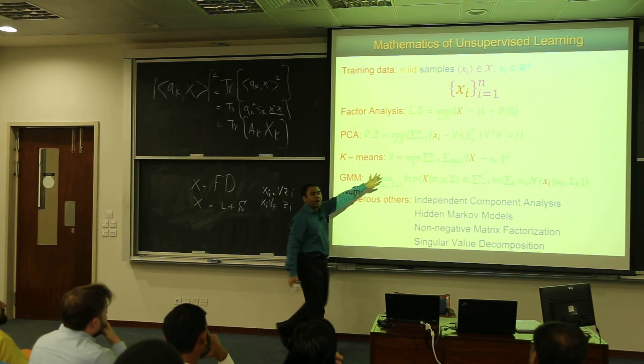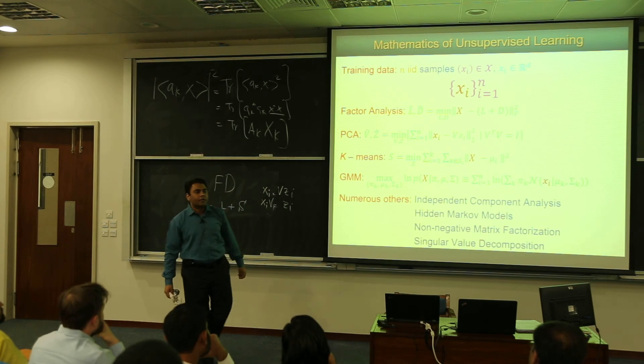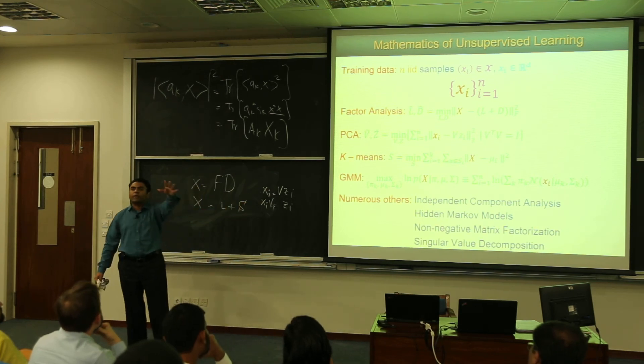So K means we don't know K in advance. Also, K means is a non-convex problem, so it is dependent on initialization. If you choose a different initialization, you may converge to a different solution. Yeah, so you have to know K in advance.